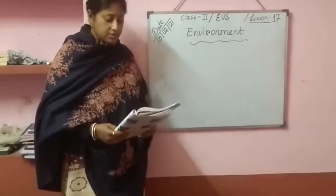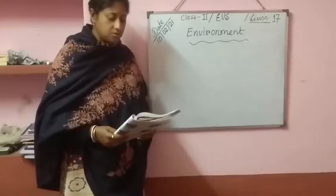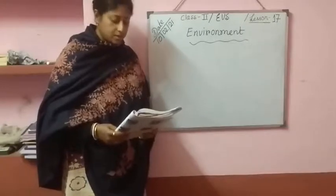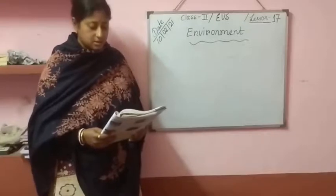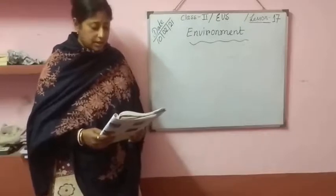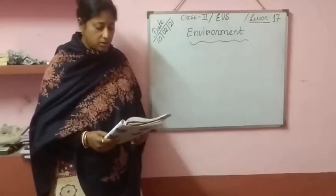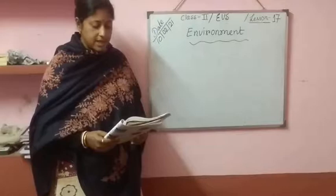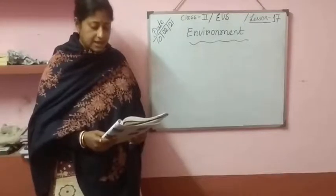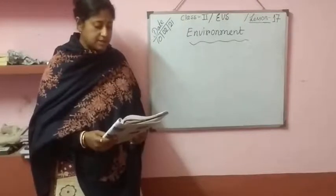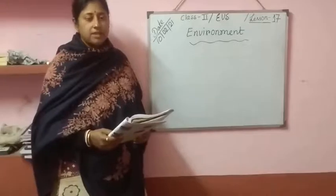Our survival on Earth is possible due to the suitable environment available to us. Environment is the total sum of all that is around us — like air, water, soil, plants, animals, etc.